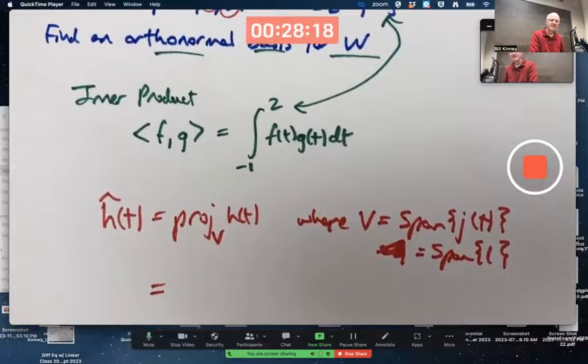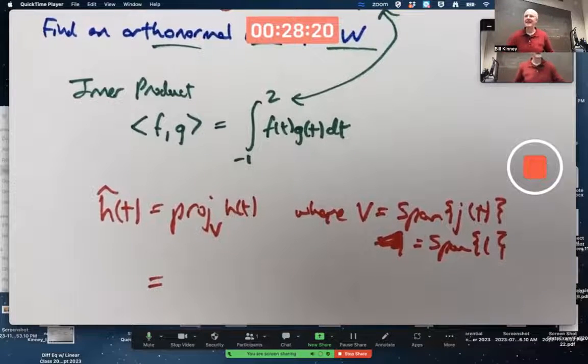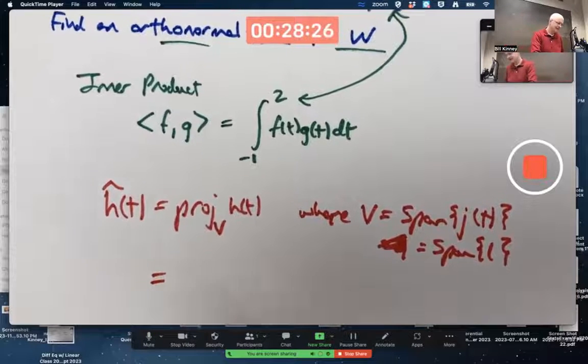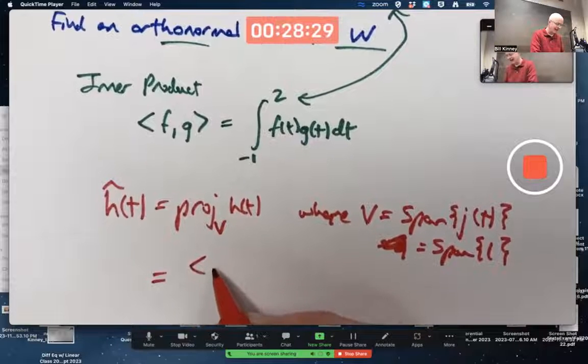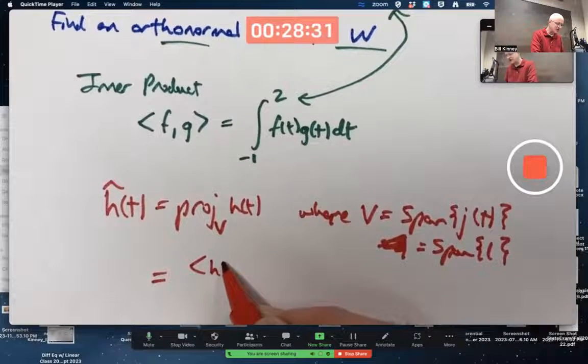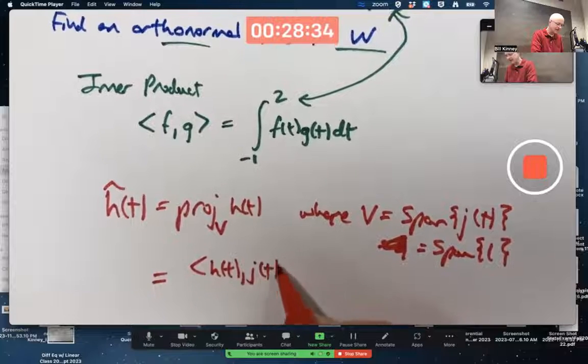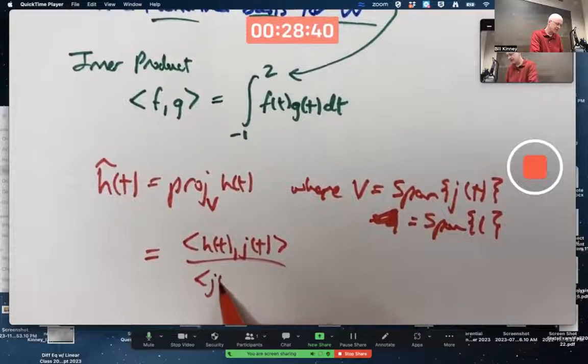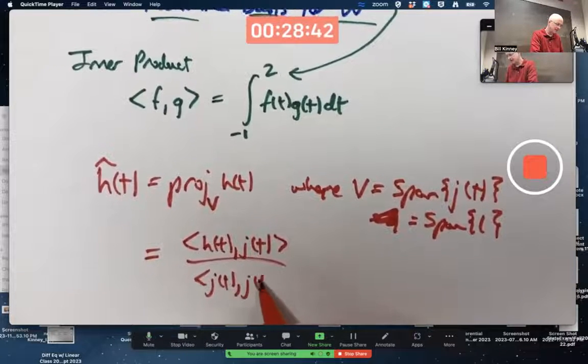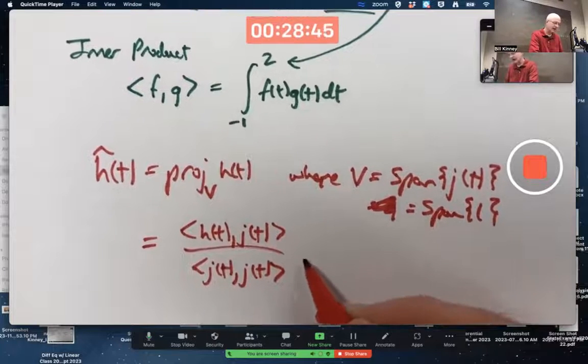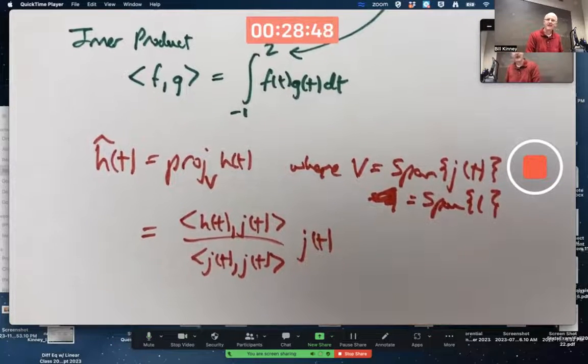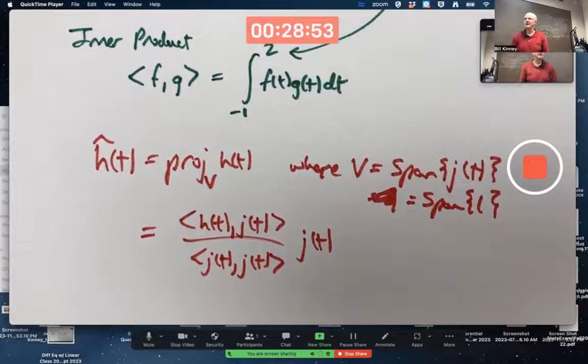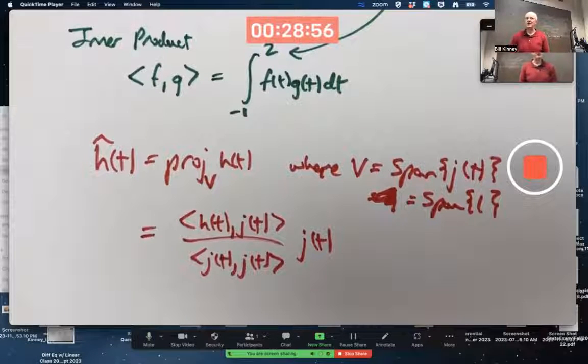What's the formula for this, and what does it mean? The formula is completely analogous to the formula with ordinary vectors and ordinary dot products. What's analogous to H dot J? It's the inner product of H with J. Divide by what's analogous to J dot J, the inner product of J with itself. Times the vector itself times J. That's the formula for this orthogonal projection, completely analogous to the ordinary one, except we're using functions for vectors and inner products for dot products.